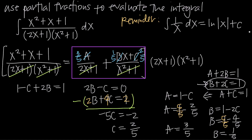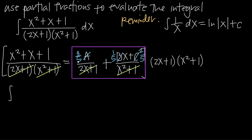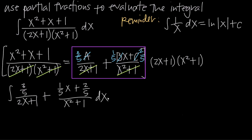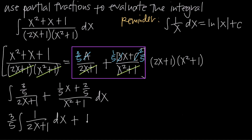This entire right-hand side is now our partial fractions decomposition with the values found for A, B, and C. This is what we'll use to replace the original fraction, giving us a much easier integral to evaluate. So instead of the original integral, we take the integral of 3 fifths divided by 2x plus 1 plus 1 fifth times x plus 2 fifths divided by x squared plus 1 dx. We split it into two separate integrals and factor out the constants.